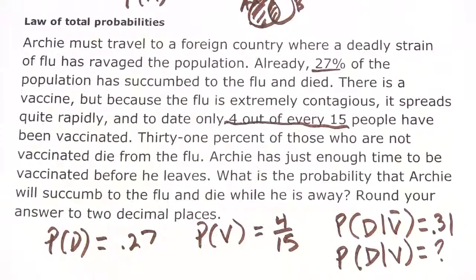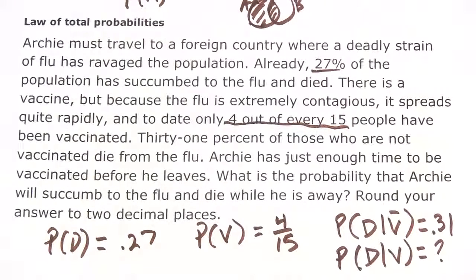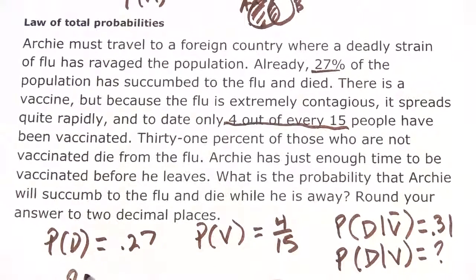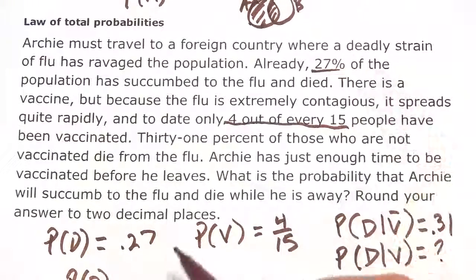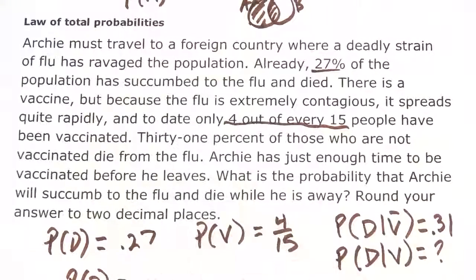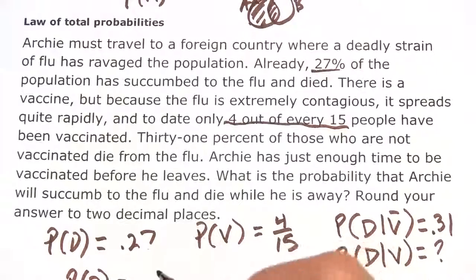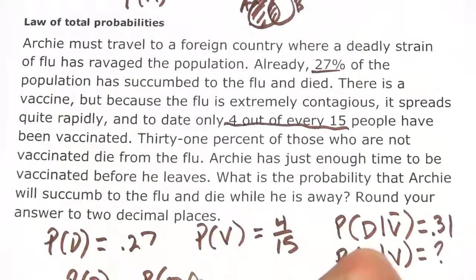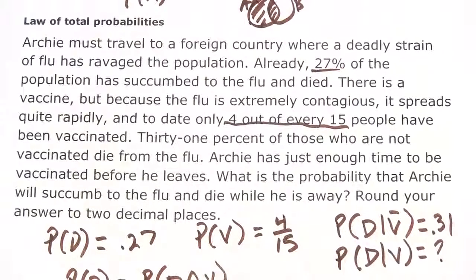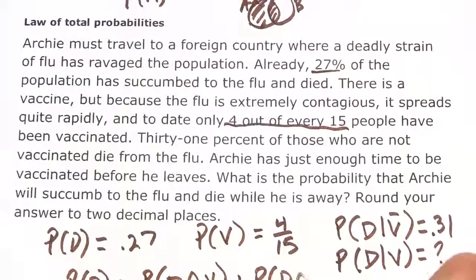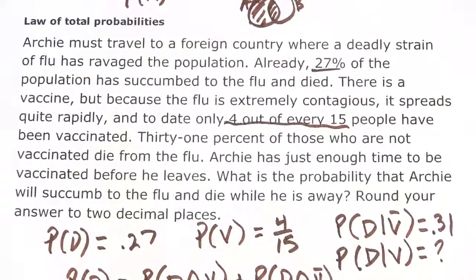How can we use the law of total probabilities to approach this problem? Let's start by writing it out. The probability of death—we'll use death and being vaccinated because those are the facts we have. This would be the probability of the intersection of death and vaccine plus the probability of the intersection of death and not being vaccinated.